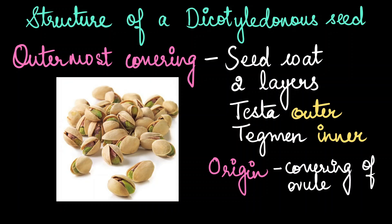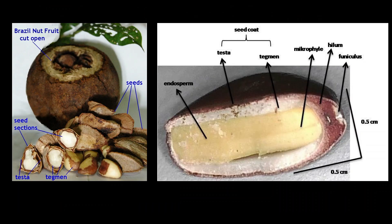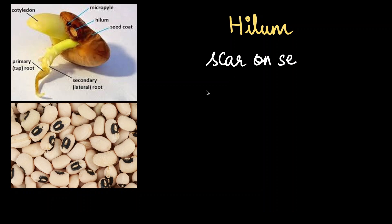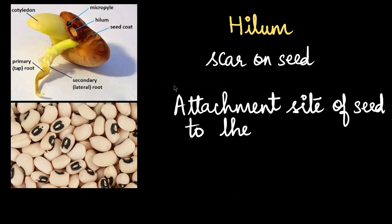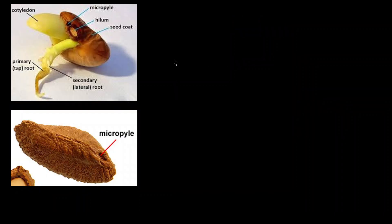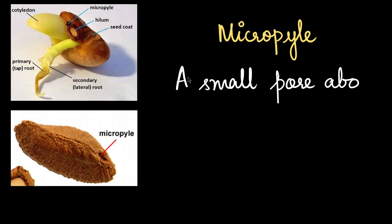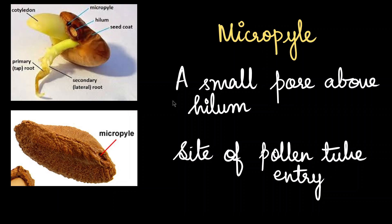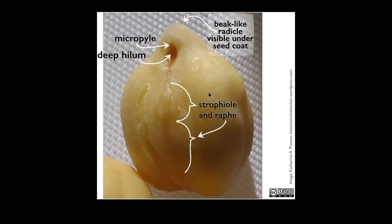The seed coat is actually the covering of the ovule. Here we have a more distinct testa and tegmen in a few of the nuts. The next structure we see on the seed coat is the hilum, which is like a scar on the seed. This is the point where the seed was attached to the fruit. Above the hilum we have a micropyle, which is more like a pore. The micropyle is important because this is the site of pollen tube entry during the pollination event. In chickpea, these structures are quite evident — we have a deep hilum and the micropyle above it.